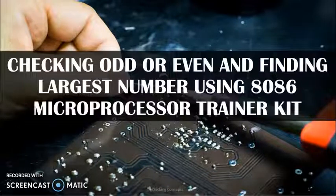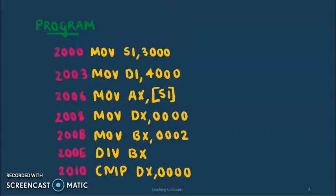Hello all, welcome to this video on microprocessor lab. Today we'll be seeing two programs: first one to check whether the given number is odd or even, and the second one to find the largest number from a set of numbers, both of which are implemented using an 8086 microprocessor trainer kit.